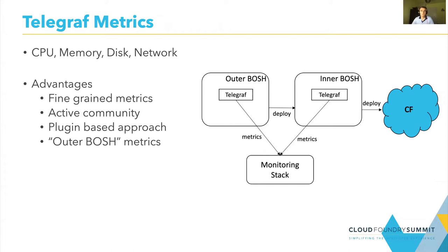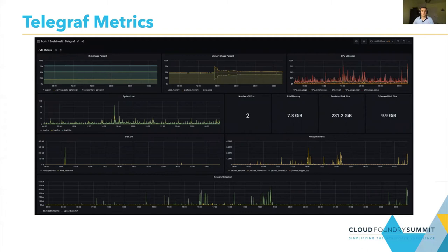That's why we are moving to a different setup with Telegraf. We co-deployed Telegraf with our BOSH directors and we use Telegraf to collect metrics for our BOSH directors. Telegraf can also forward the metrics to your monitoring stack. We collected moment metrics for CPU, memory, disk, and network. With Telegraf, you have an active community which is continuously improving the metrics, and you have plenty of metrics to choose from — really a lot of metrics, including fine-grained ones. Another advantage of this setup is you have metrics for the outer BOSH as well. This is one dashboard we have based on Telegraf metrics.